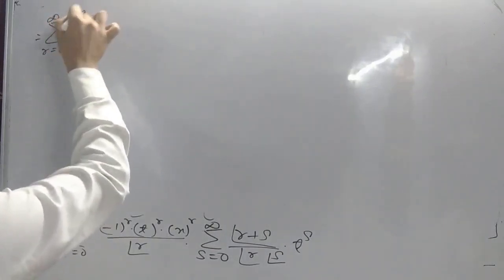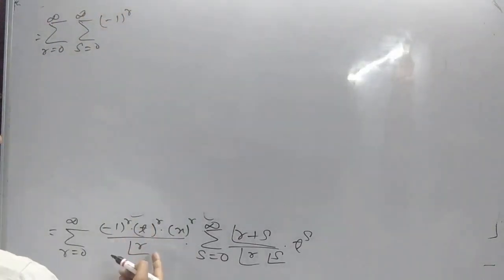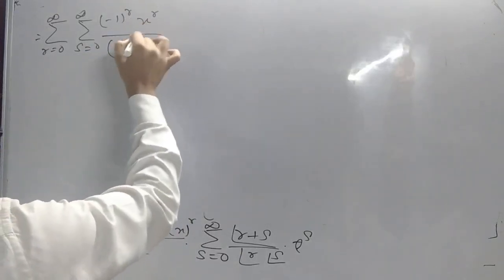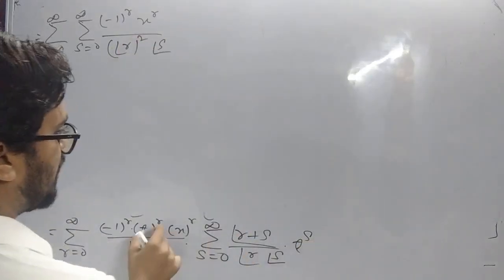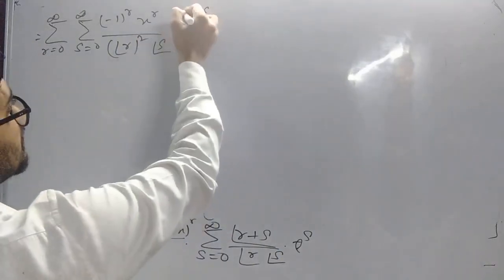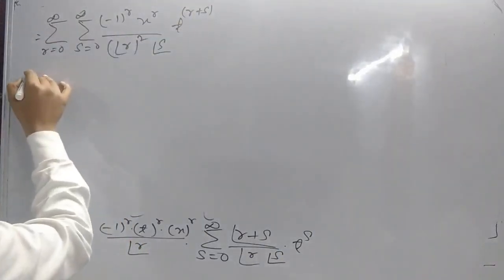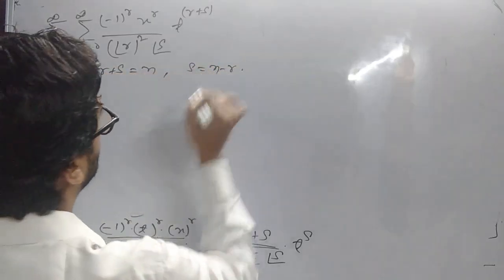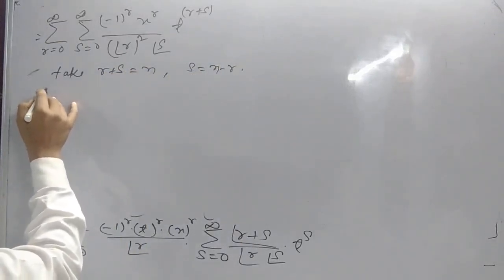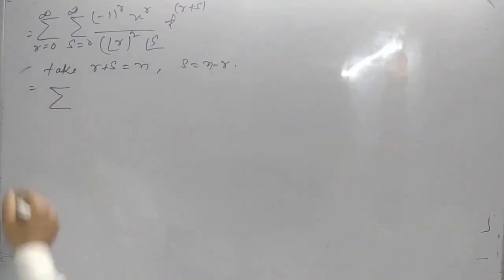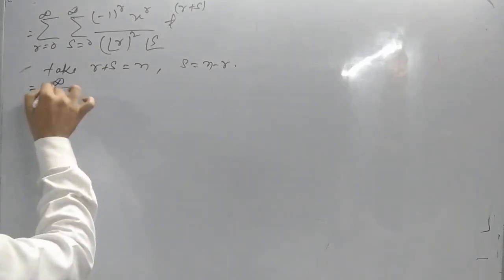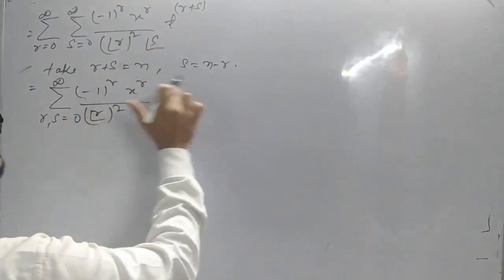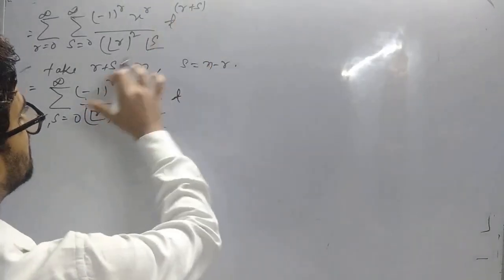So this becomes a double summation: r equal to 0 to infinity, s equal to 0 to infinity, of minus 1 to the power r, times x to the power r, divided by r factorial squared, times s factorial, times t to the power r plus s. Now taking r plus s equal to n, that gives s equal to n minus r. This becomes summation r equal to 0 to infinity of minus 1 to the power r, times t to the power r, times x to the power r, divided by r factorial squared, times (n minus r) factorial, and t to the power r plus s becomes t to the power n.